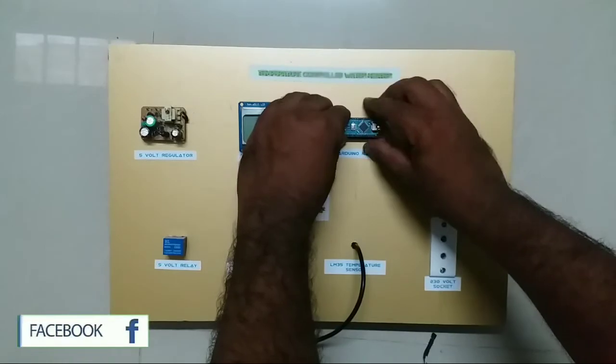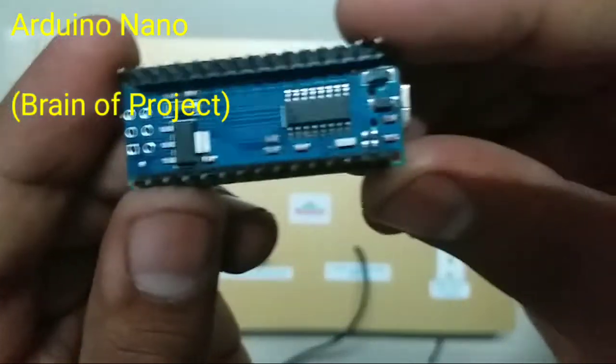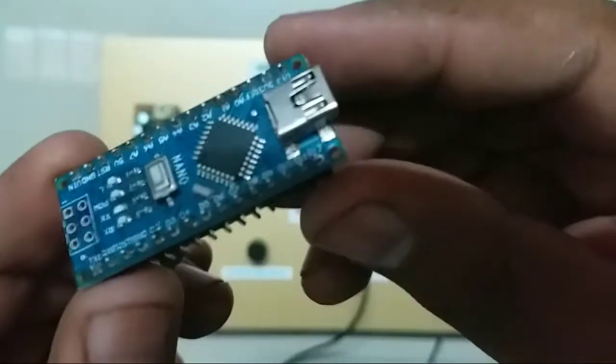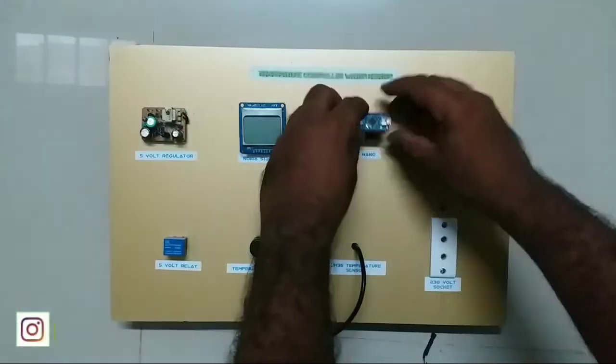Arduino Nano is the brain of this project. It is also removable. If something wrong happens, we can remove Arduino and debug the fault. It is used to run all the components like LCD, relay, etc.